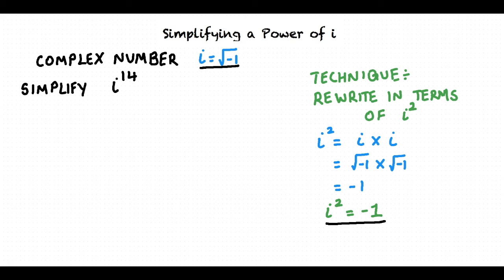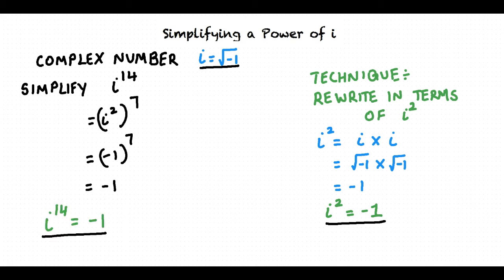Now, why don't you try simplifying i to the power 14. The first step is to rewrite the expression in terms of i squared. Thus, i to the 14th power is equal to i squared to the 7th power. The next step is to replace i squared with negative 1. The expression now becomes negative 1 to the 7th power, which equals negative 1. Thus, the simplified form of i to the 14th power is negative 1.